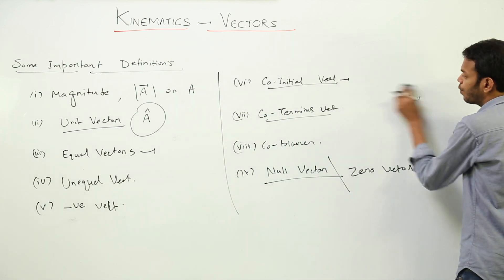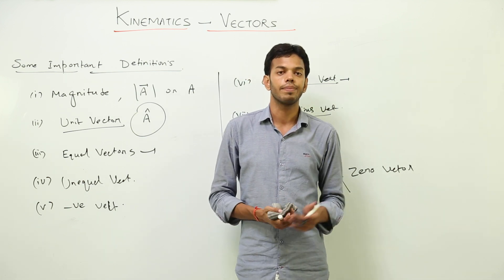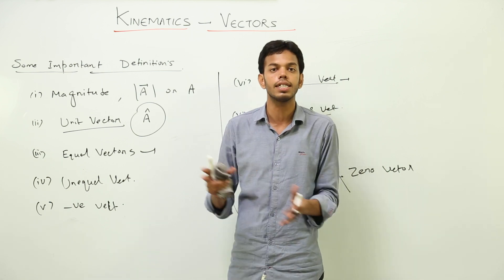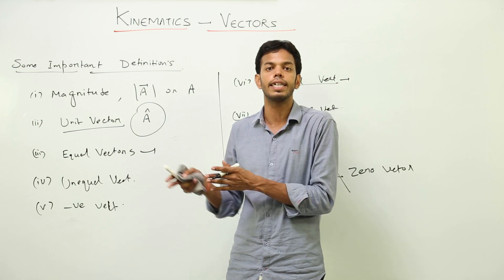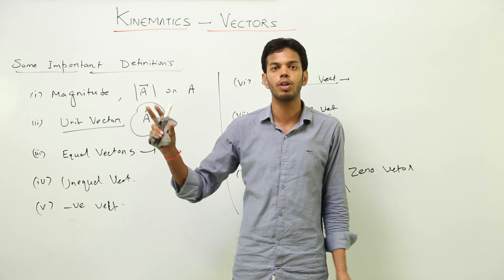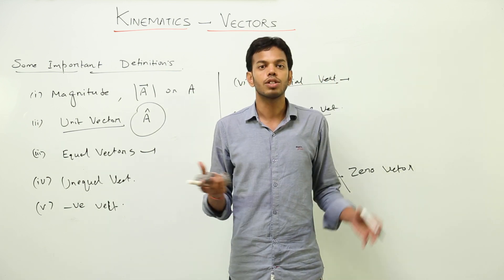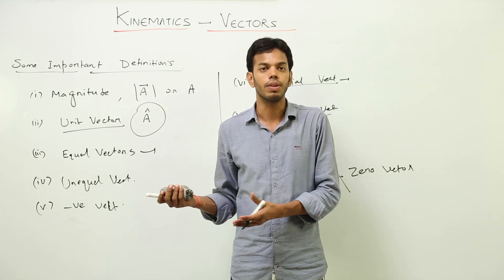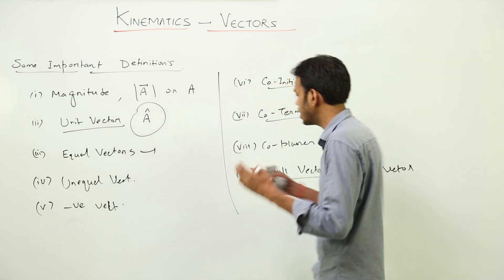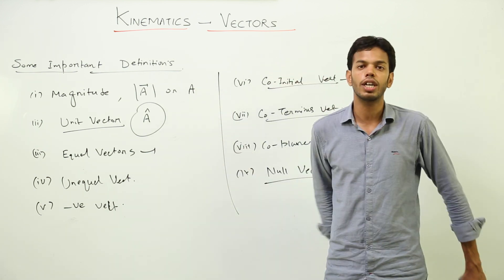The usefulness of the null vector: when we add two vectors we get a resultant. The resultant is the net or final product of any operation on two or more vectors — addition, subtraction, or multiplication. The resultant of two equal vectors when subtracted should be a zero vector. That is why the null vector is still in practice. These are some important definitions related to vectors.